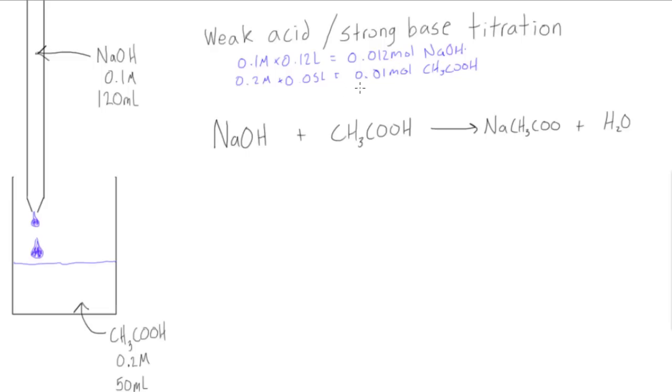Looking at this right away we can see that acetic acid now, once we're past the equivalence point, is going to become our limiting reactant. We have less moles of it and it's reacting in a one-to-one ratio. So knowing that, let's go here and make our table: initial, change and equilibrium concentrations.